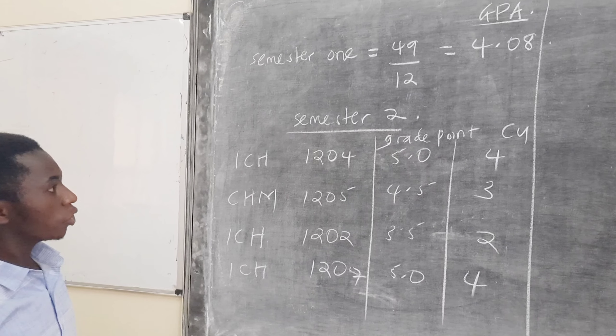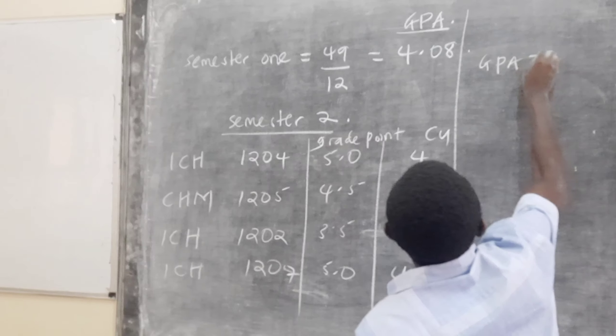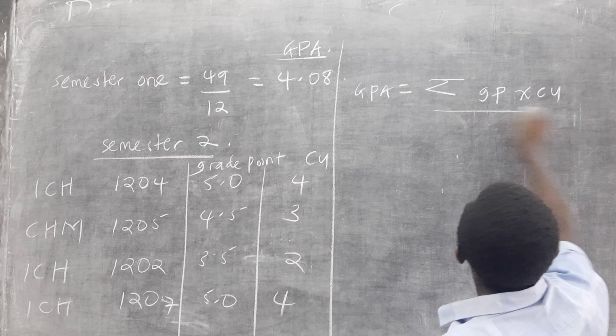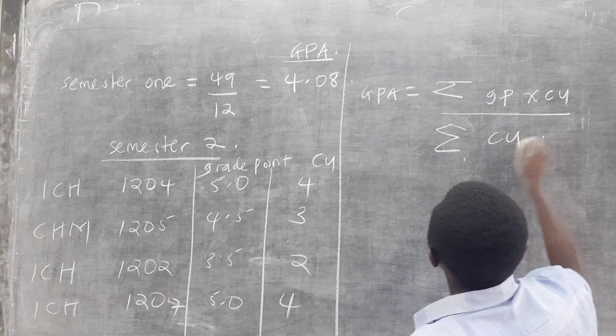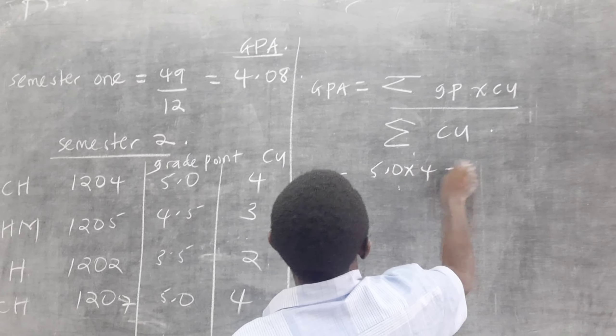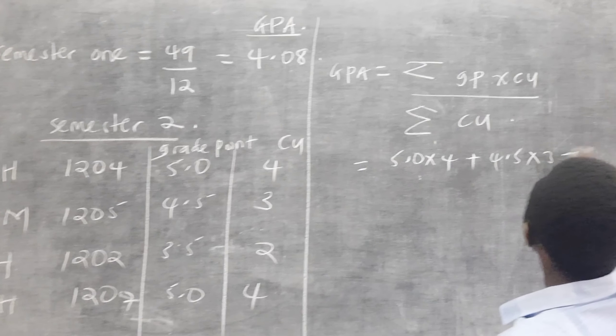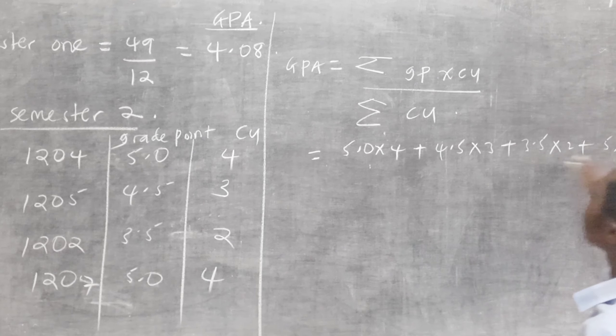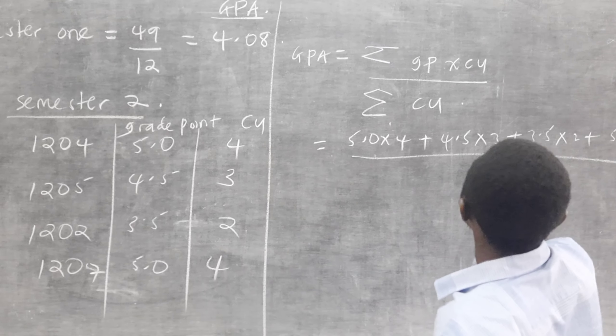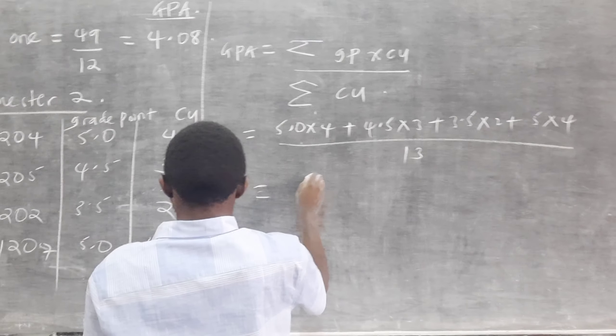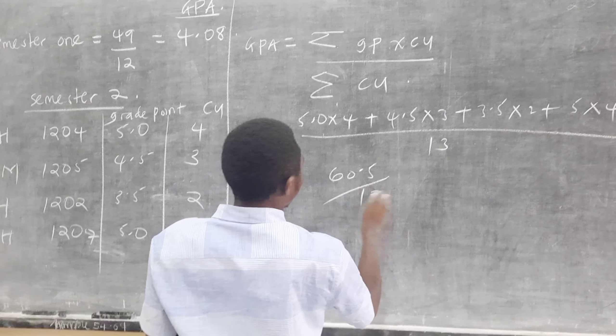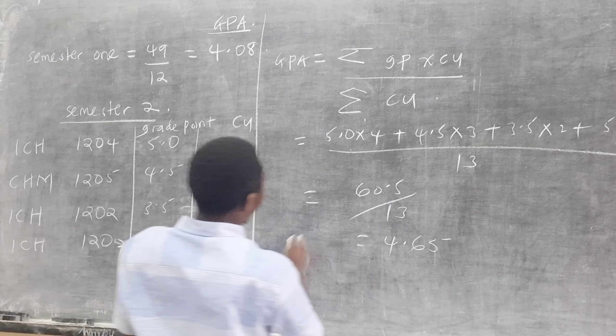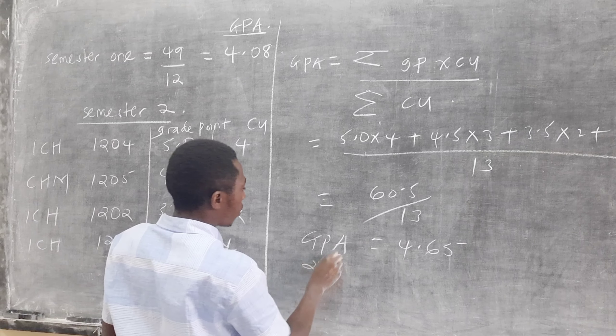For you to be able to calculate the GPA, the GPA is the summation of grade point times CU over summation CU. Therefore, it will be 5.0 times 4 plus 4.5 times 3 plus 3.5 times 2 plus 5 times 4 over the summation of 6, which is 13. This gives us 60.5 over the summation, and this is giving me a 4.65 as your GPA of second semester.